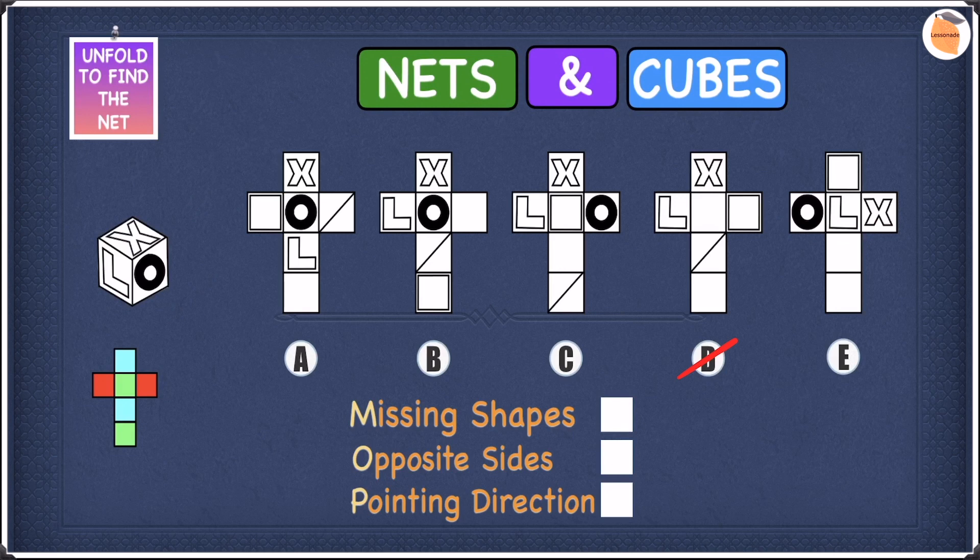So out of the five options we started with we're now left with four. We're left with A, B, C and E. We managed to cross off D. Now we can put a tick next to missing shapes and let's move on to opposite sides.